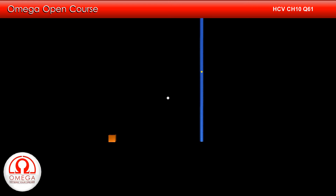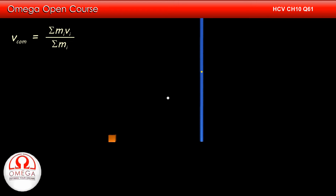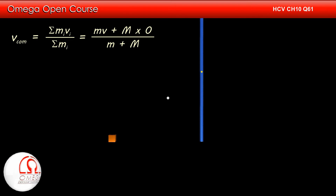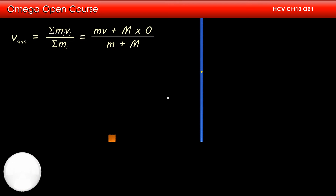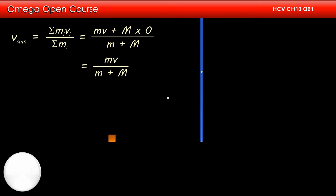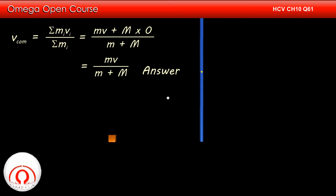The velocity of the centre of mass is given by the summation of mass times velocity divided by summation of mass. Putting the values, we get m·v plus M·0 divided by m plus M. Thus the velocity of the centre of mass is mv/(m + M). This is the answer to part A.